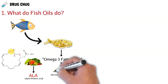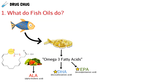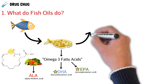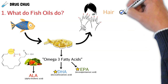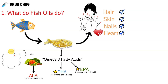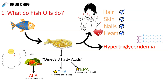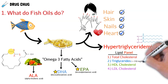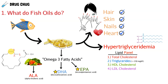Going back to fish oils, which is the main focus — we have DHA and EPA. These two fatty acids are the ones we extract from fish, and we see that fish oils help with your hair, skin, and nails, and most importantly they help with your heart. Specifically, they help patients with hypertriglyceridemia, which means they have too much triglycerides in their blood. Looking at a lipid panel, we want triglyceride levels to be below 150 mg/dL, so if a patient has a level of 300, we could give them fish oils to help reduce that.